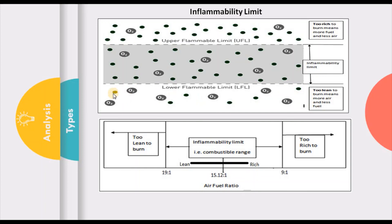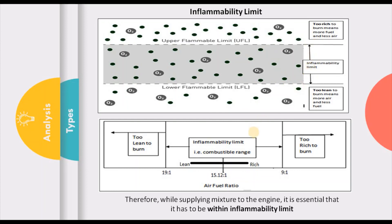Similarly, when the mixture is too lean, we have more air and less fuel. A fuel molecule may burn using nearby oxygen and produce heat, but that heat has to reach the next fuel molecule. However, in between there are so many air molecules that the heat produced may be absorbed by them, and the heat may not reach the next fuel molecule. Even though oxygen is available, the fuel molecule is unable to burn because it cannot get sufficient heat. The flame is unable to sustain, and therefore all fuel molecules are unable to burn. So if it is too rich or too lean, it is unable to burn.